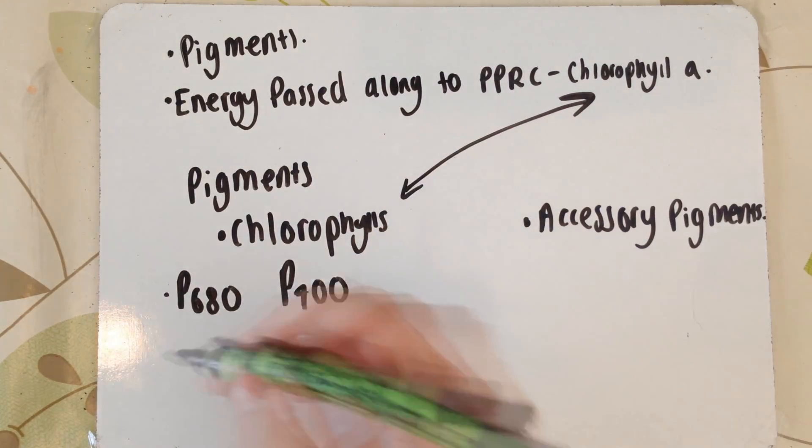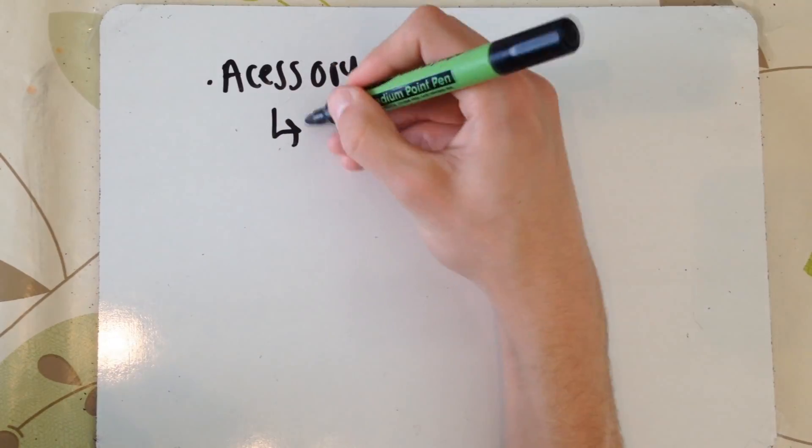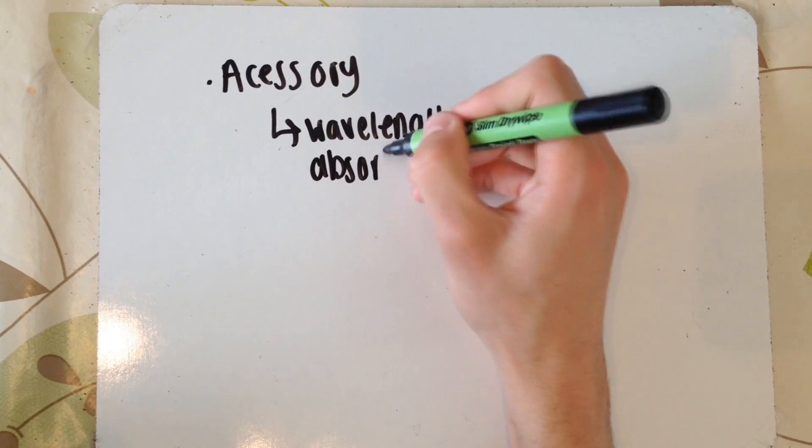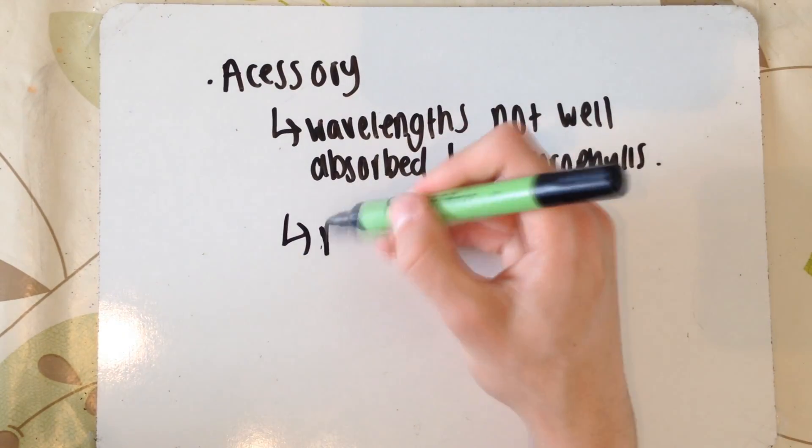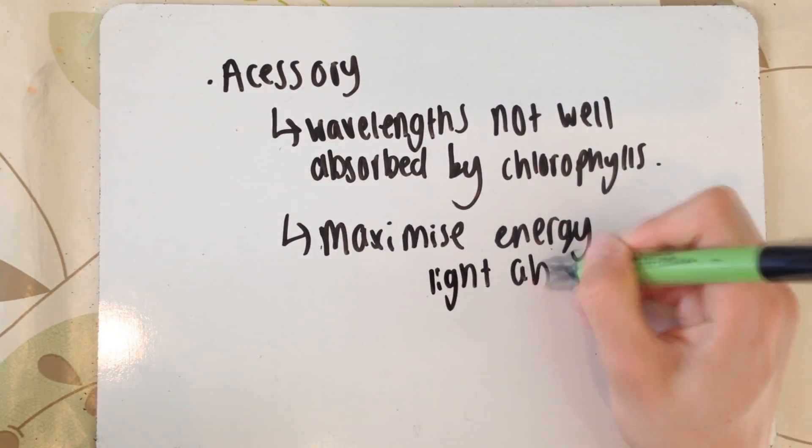Between all the chlorophyll pigments you absorb the blue light and the red light. The whole purpose of the accessory pigments is essentially to absorb the wavelengths of light that are not well absorbed by chlorophylls, which obviously maximizes the light absorbance, the amount of energy that can be processed here.